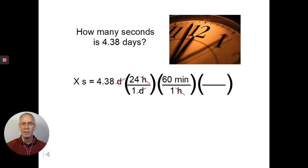I just have to type it in my calculator. 4.38 times 24 equals times 60 equals times 60 equals. Divide by 1. Divide by 1. Divide by 1. And that gives me my final answer. There are approximately 378,432 seconds in 4.38 days.